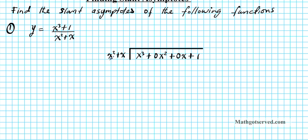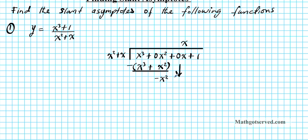We always look at the leading term of the dividend and the divisor. x squared goes into x to the third, x times. So we place x in the x column — make sure they line up. x times x squared is x to the third, and x times x is x squared. This is your standard long division algorithm. Then we subtract: we get 0 for the x cubed terms, and this becomes negative x squared. We bring down plus 0x.